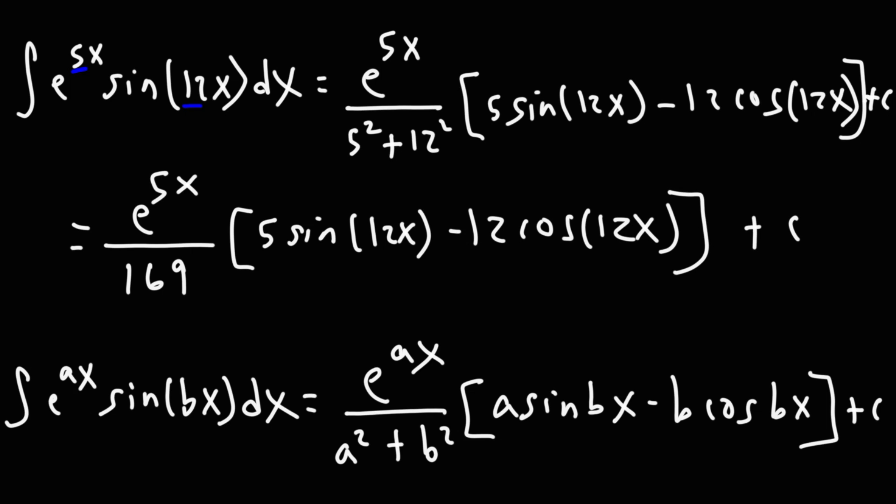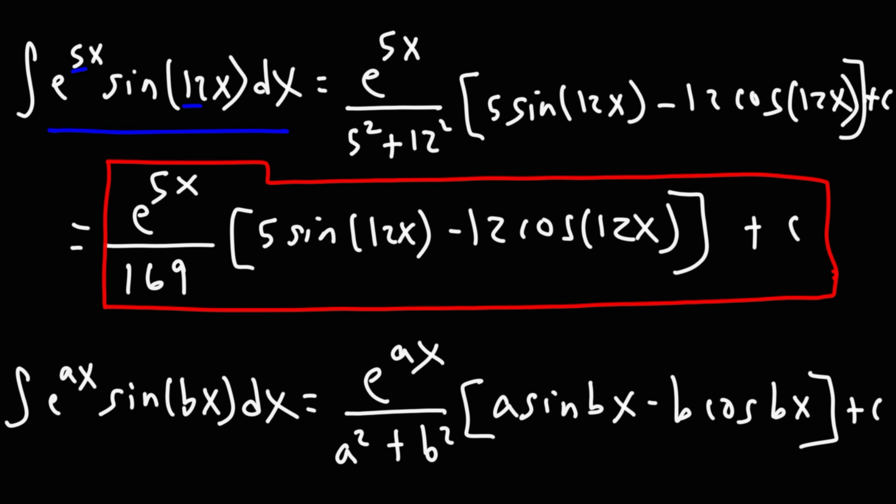As you can see, using this formula helps you to get the answer a lot faster than using the integration by parts formula. So that's how you can find the integral or the antiderivative of any problem in this form, either e to the x sine x or any variation of e to the x cosine x. It will work for both.